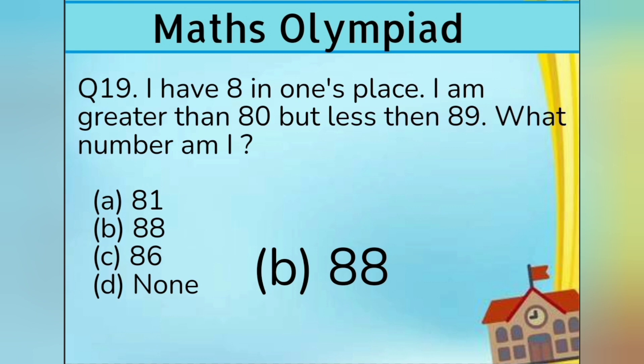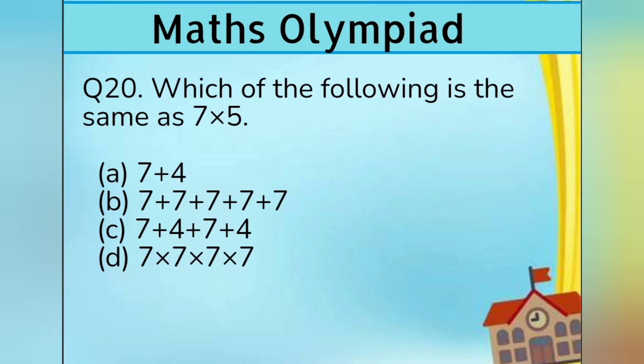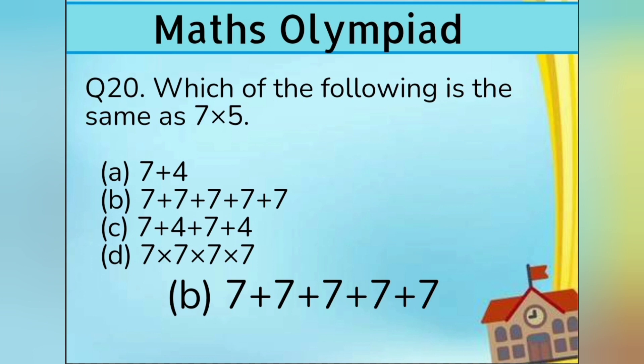Question number 20. Which of the following is the same as 7 x 5? Option A 7 plus 4, Option B 7 plus 7 plus 7 plus 7 plus 7 plus 7, Option C 7 plus 4 plus 7 plus 4, Option D 7 x 7 x 7 x 7. Answer is Option B: 7 plus 7 plus 7 plus 7 plus 7.